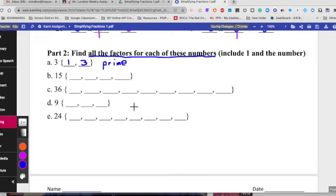Next one. We have 15. And we go 1. And I know that 3. And 3 times what? 5. And the last one is 15. There's your number.